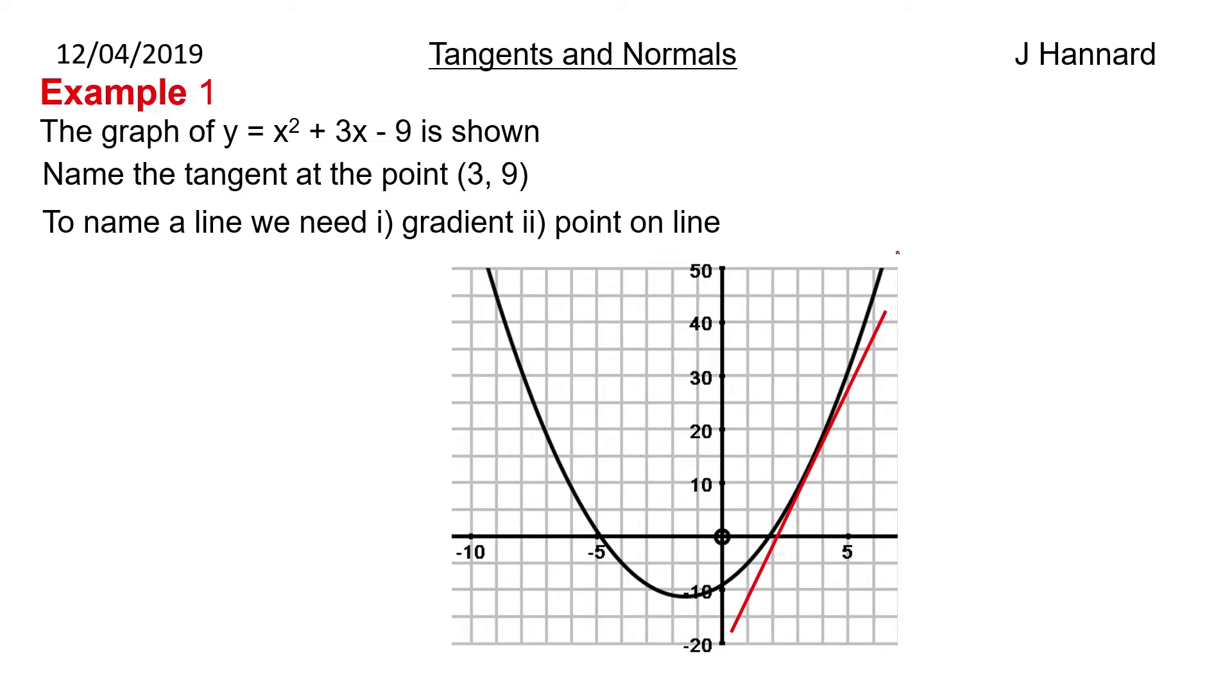To name a line we need the gradient and a point on the line. First of all we have our equation y = x² + 3x - 9. dy/dx is bring the power to the front and knock 1 off the power, so we get 2x + 3. So that is the gradient finder.